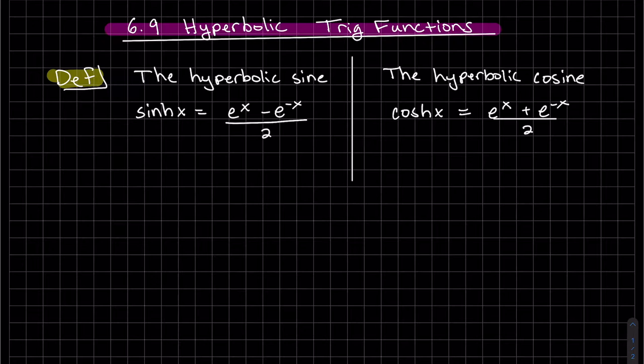So the hyperbolic sine is called sinh x. We can also write it as a function of x, and same with this one. The hyperbolic cosine is cosh x, and we can write it like so. They are very similar and they involve e to the x and e to the minus x. The sinh x has a minus in between. The cosh x has a plus.